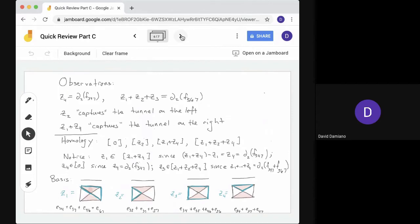Okay. So first of all, notice that Z4 on the bottom right. That basis vector is the boundary of F347, as we said. So it's a boundary, should be equivalent to 0. On the other hand, notice that if we take Z1 plus Z2 plus Z3, work that out, we'll see that it's equal to the boundary of the other two simplex, boundary of F567. All right. Now we also said that Z2, so Z2 is the second from the left on the bottom, that captures the tunnel on the left. And Z1 plus Z4 captures the tunnel on the right. So the homology will be generated by 0, Z2, Z1 plus Z4, and Z1 plus Z2 plus Z4.